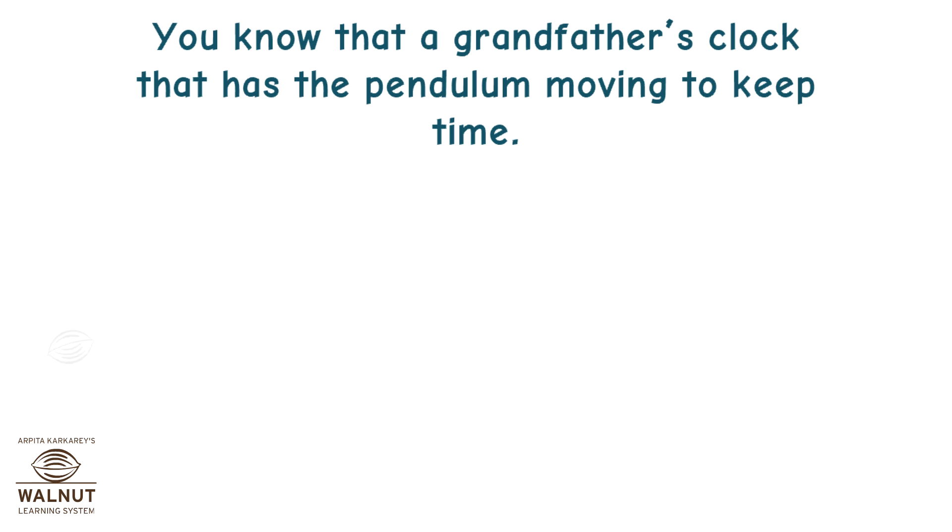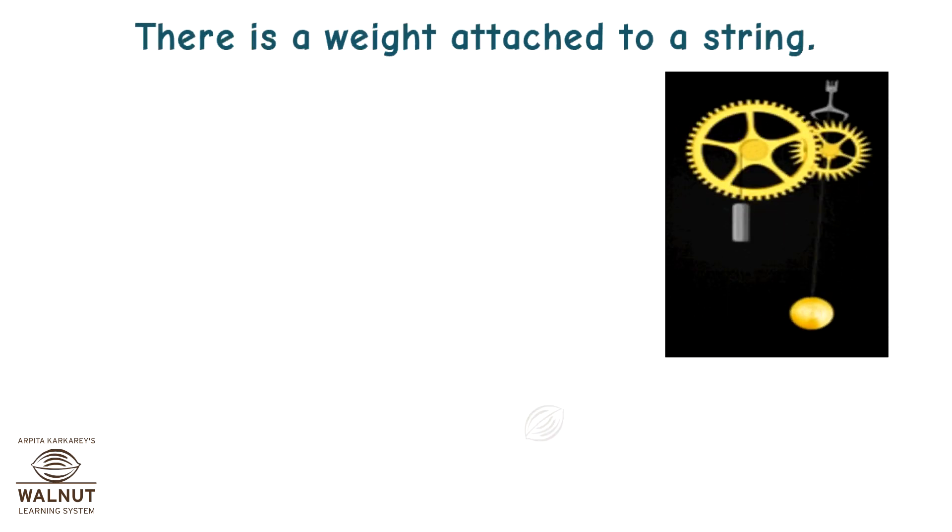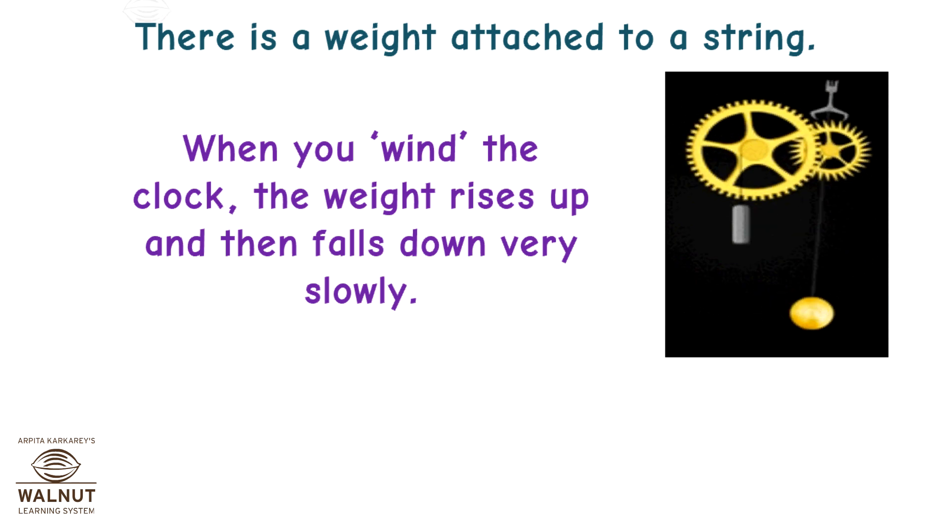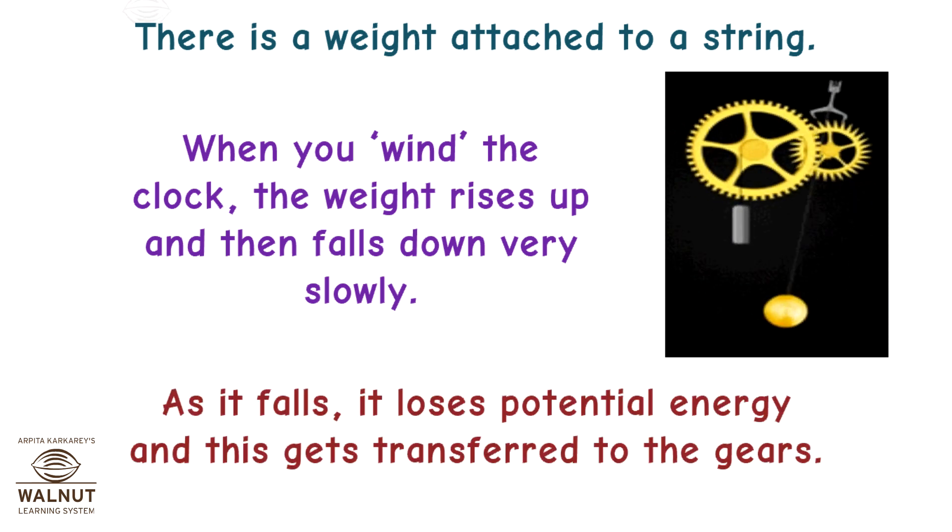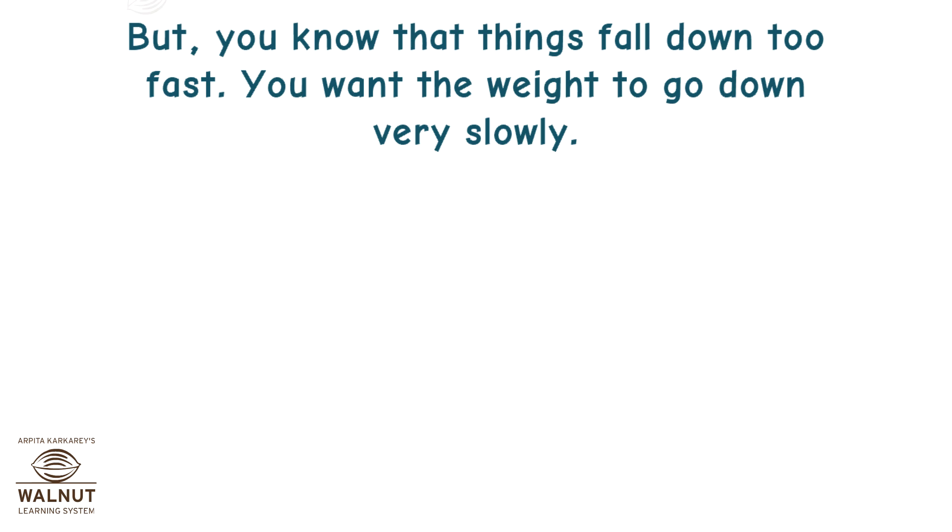You know that a grandfather's clock has the pendulum moving to keep time. What gets the pendulum moving? It does not need an external push. There is a weight attached to a string. When you wind the clock, the weight rises up and then falls down very slowly. As it falls, it loses potential energy and this gets transferred to the gears. But you know that things fall down too fast. You want the weight to go down very slowly. This is where the pendulum steps in.